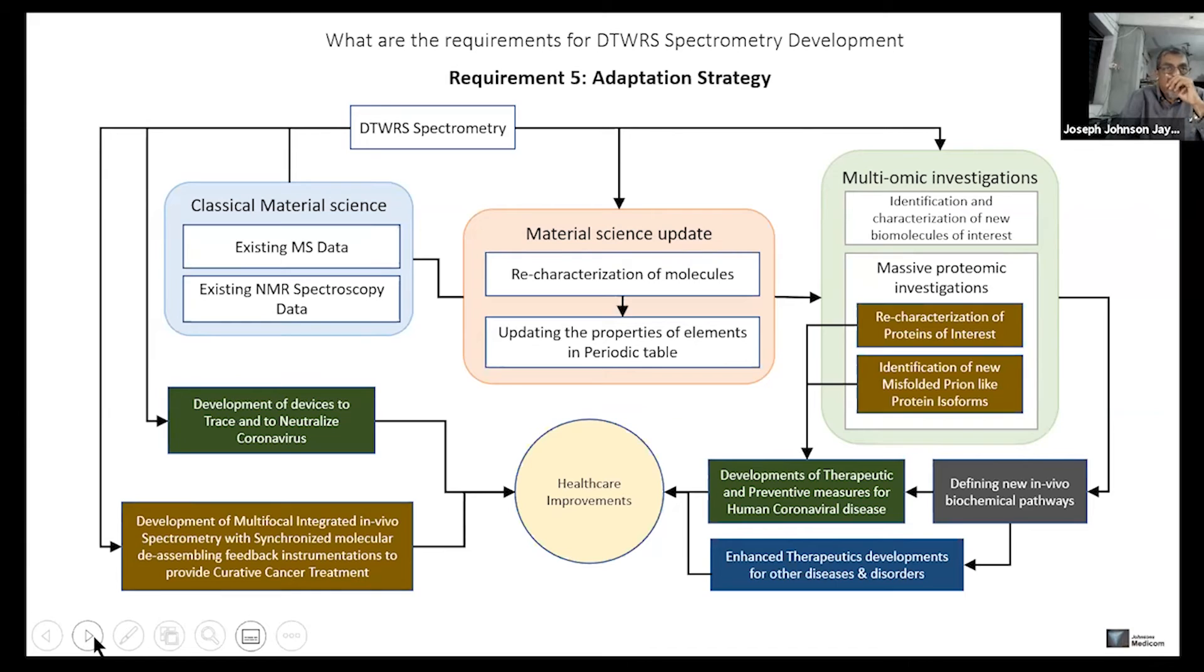The identification of new misfolded prion-like protein isoforms will affect the development of therapeutic and preventive measures in human coronavirus disease also. This spectrometry is very well applicable.